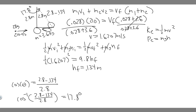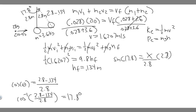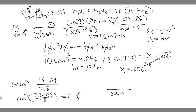Now we can find the horizontal component. Using sine: sin(θ) equals opposite over hypotenuse, where the opposite side is x — the horizontal component we're looking for — and the hypotenuse is 2.8 meters. Multiplying both sides by 2.8: x equals 2.8 times sin(17.8°), which gives x equals 0.8559, rounded to 0.856 meters. So the horizontal component is 0.856 meters.